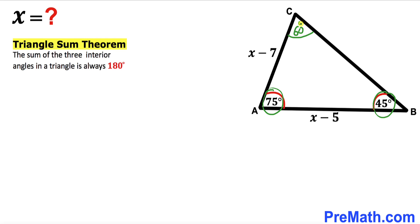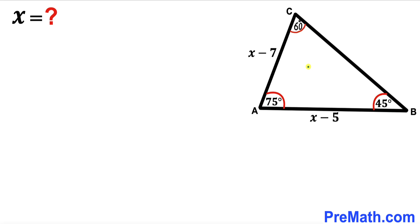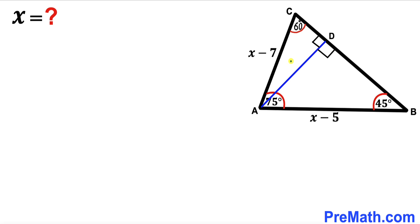In the next step, we are going to draw some auxiliary lines. I have dropped a perpendicular AD onto side BC, and as a result we get two right triangles.